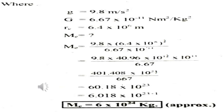Here is the calculation of the mass of Earth. Using our previous formula, mass of Earth Me = g × Re² / G. The known values are: gravity g = 9.8 m/s², gravitational constant G = 6.67 × 10⁻¹¹ N·m²/kg², and radius of Earth Re = 6.4 × 10⁶ m. The mass of Earth is unknown.